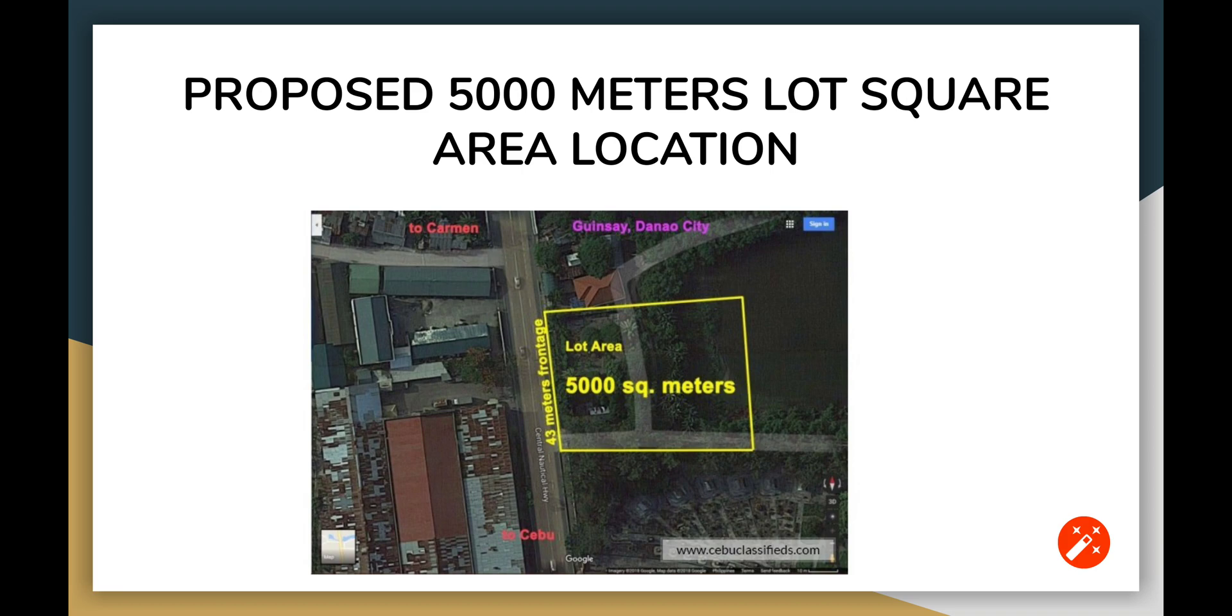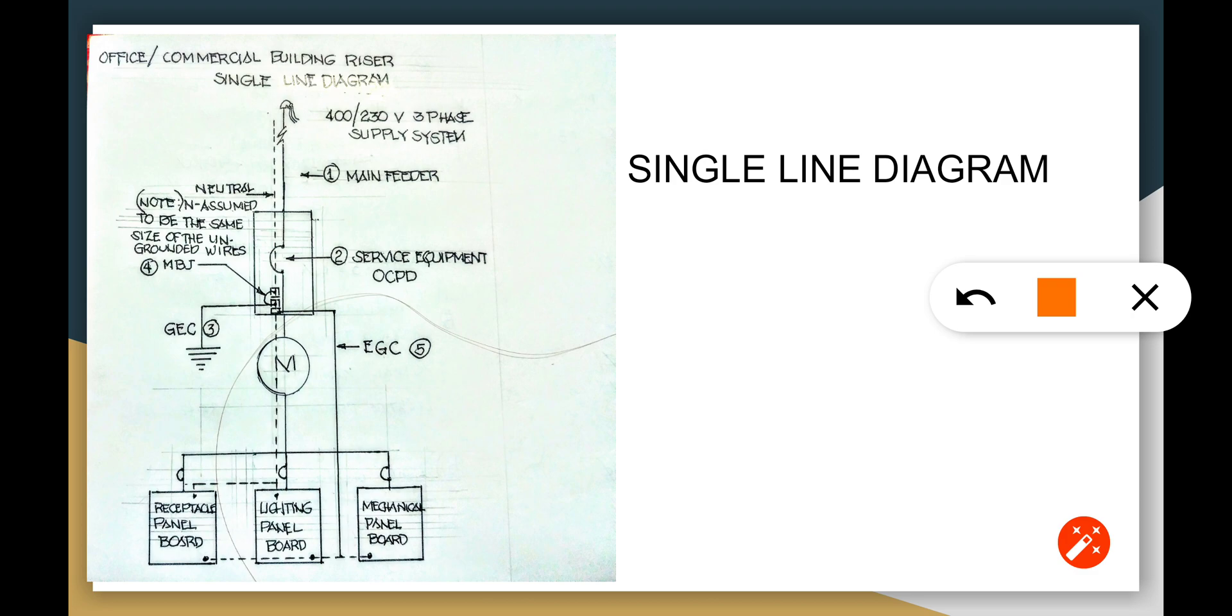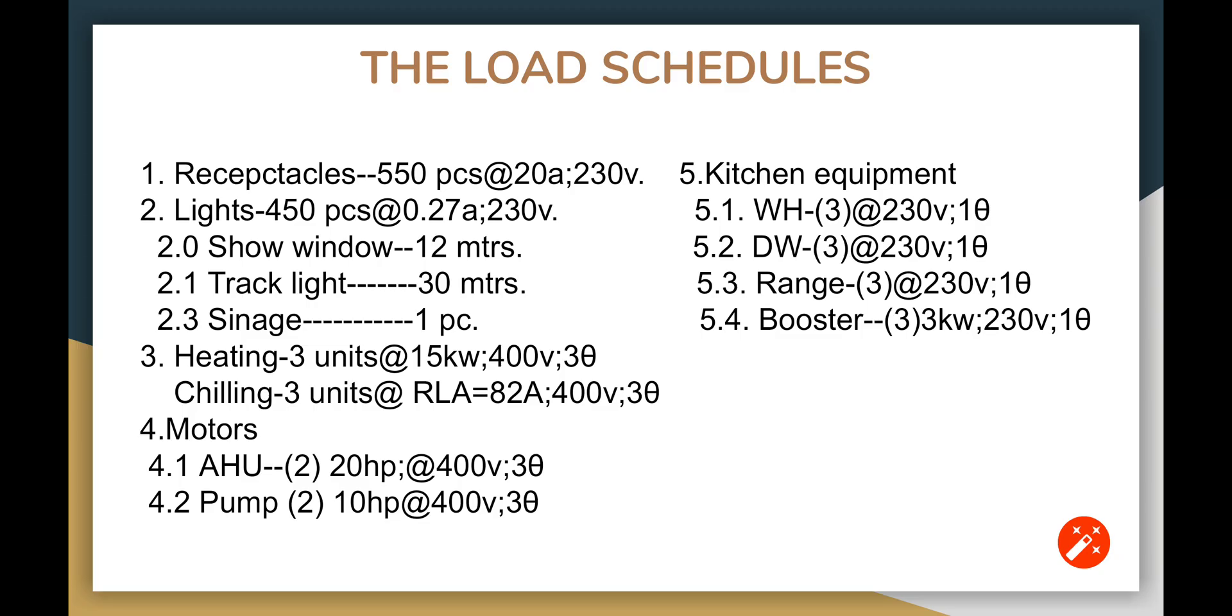It's going to be a proposed 500 square meter area location with a single line diagram. We're going to find out the main feeder line, the service equipment OCPD, the equipment grounding conductor, the GEC, and the main bonding jumper. We're going to calculate everything and assume the neutral is going to be the same size as the ungrounded conductors for the purpose of mitigating expected harmonics in the system that distort the system. These are the load schedules.